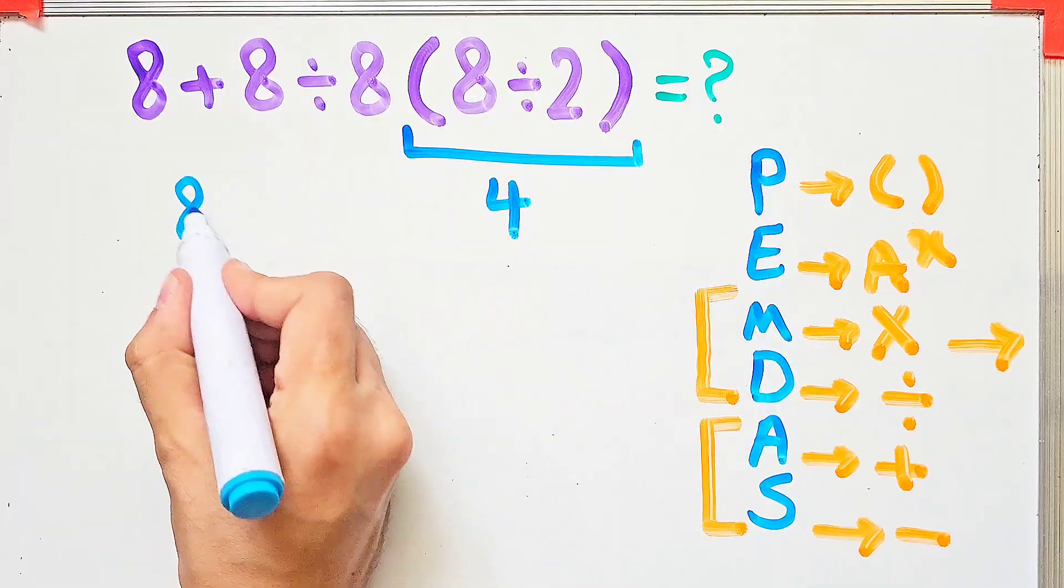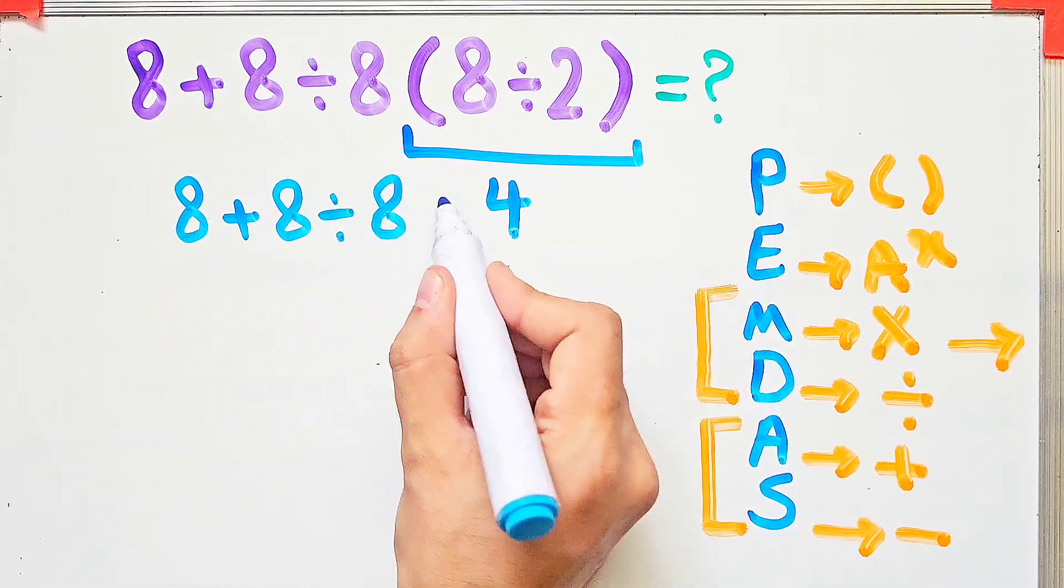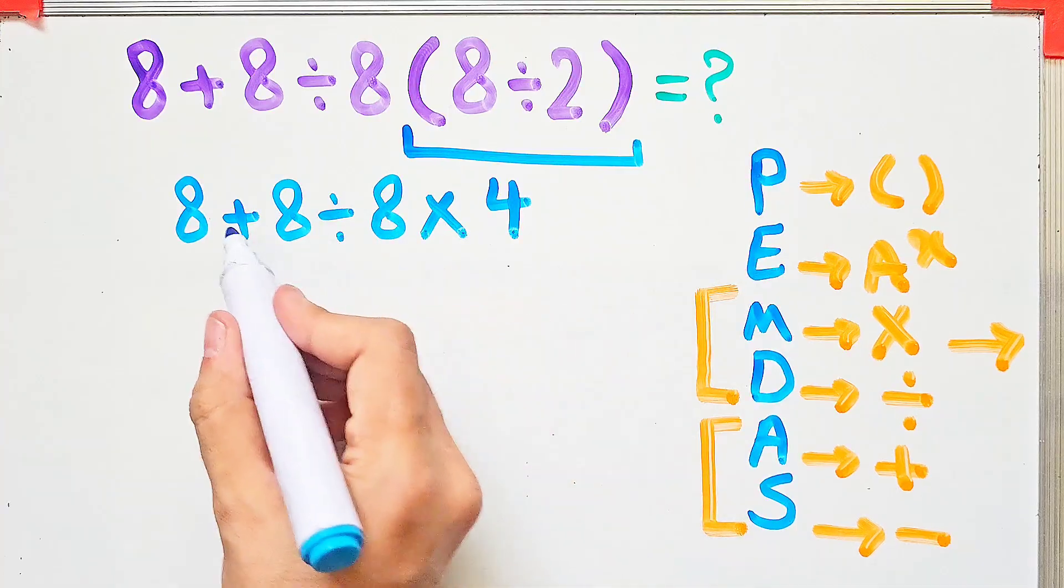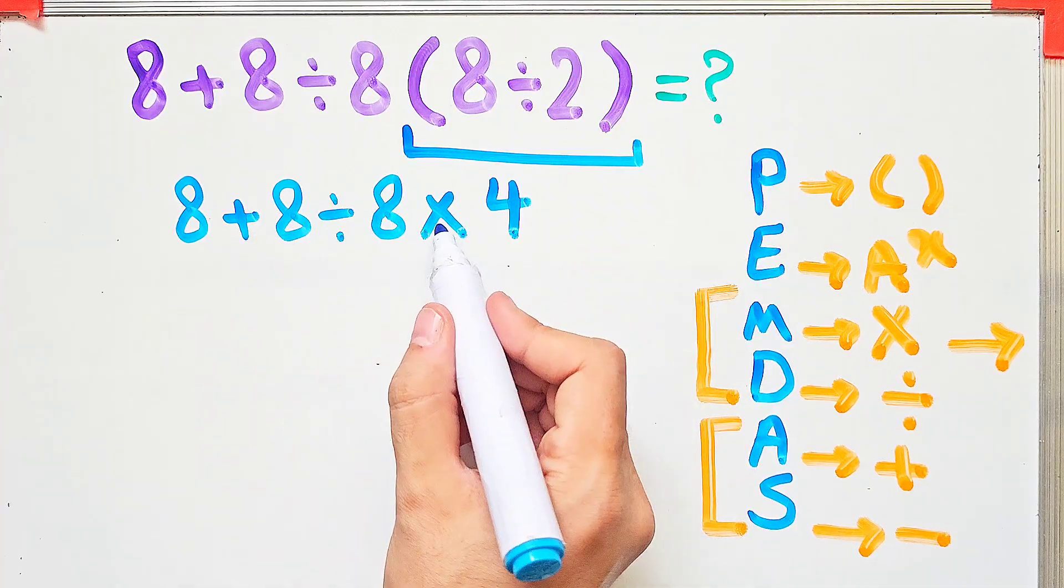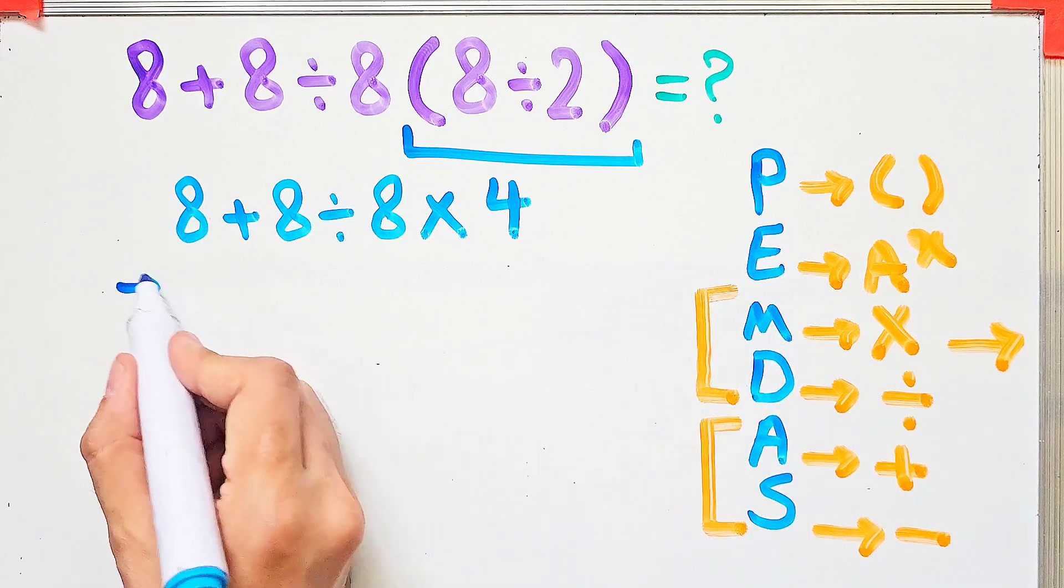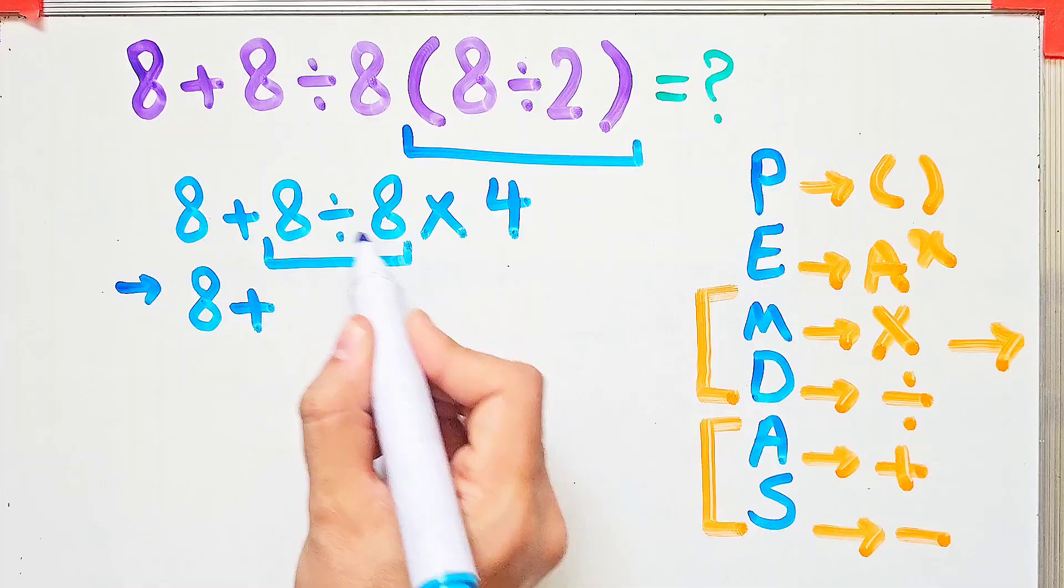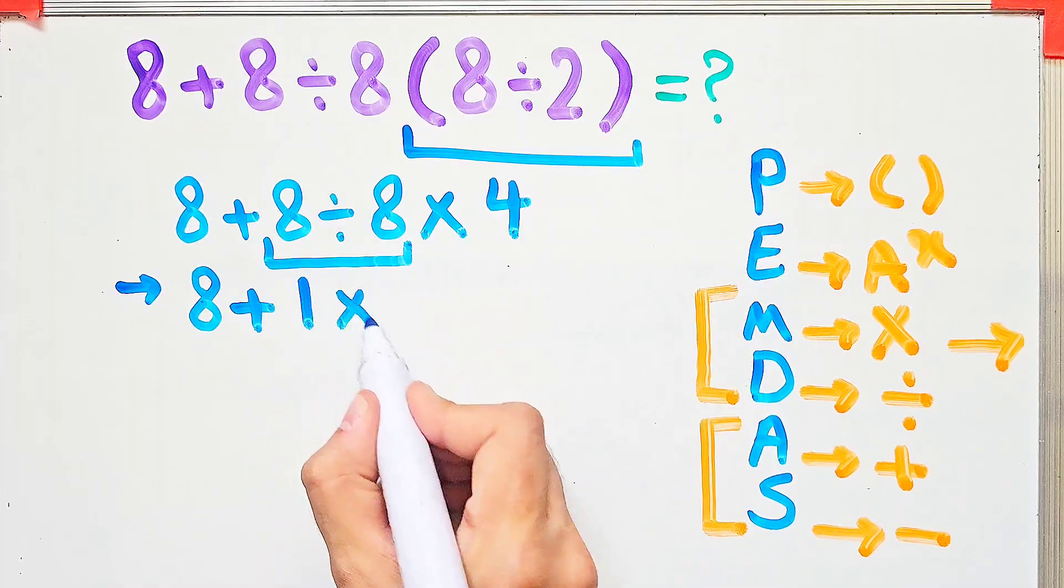Now we have 8 plus 8, then divided by 8, then times 4. Because we have division and multiplication, we start from the left and simplify the question. First we do this division, 8 plus 8 divided by 8, that equals 1, then times 4.